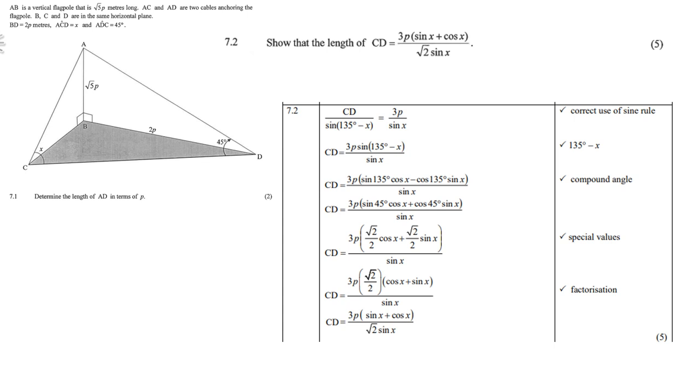A, C, D. Then, I use the sine rule. So, CD over the sine of 135 minus x. Now, where is that coming from? Well, it is 180 minus, in brackets, x plus 45. So, sum of the angles of a triangle. And that is where that 135 minus x is coming from. Equals to, then you take 3p over the sine of x.